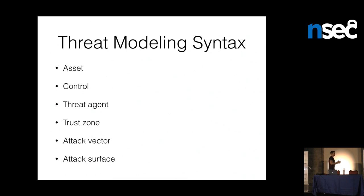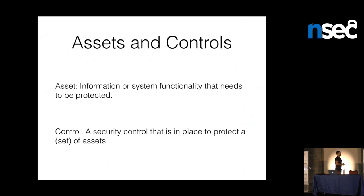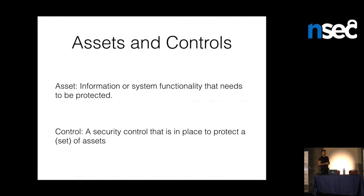Here's some of the syntax we're going to use throughout this talk. An asset is anything that's sensitive that we need to protect — sensitive information like credit card information, source code, or healthcare records — or sensitive functionality. Consider Amazon's AWS: they have internal APIs for EC2 instance memory snapshots that are very guarded and you want to make sure nobody on the internet has access to. A control is something in place to protect an asset — input validation could be a control, and TLS on network connections is another control.